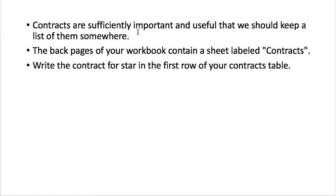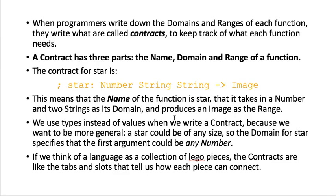So contracts are very important and useful, and you should keep a list of them somewhere. And so your workbook, actually in the last pages of your workbook, the last page of the last two pages, you'll find a sheet labeled contracts. So go ahead and write the contract for star in your workbook in the first row of the contracts table. So I'll go back to here so you can see it. So write the contract for star at the end of your workbook, and then that will be it for today.